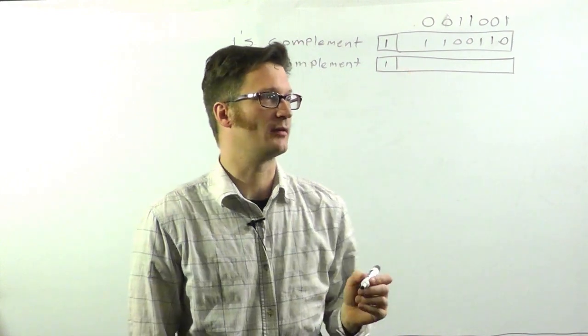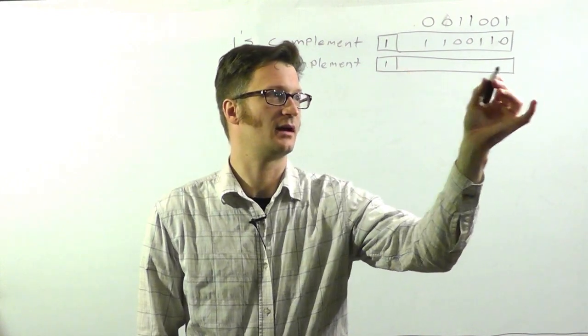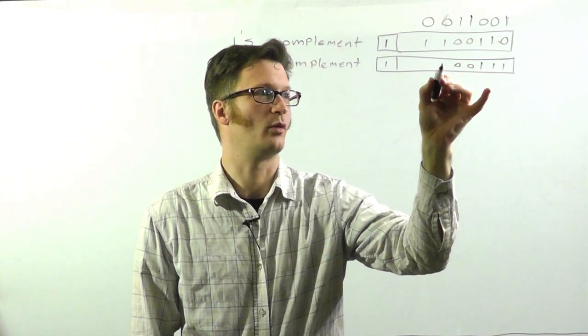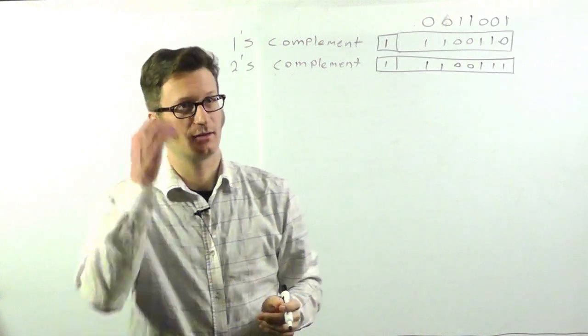So, the sign bit's 1 because it's negative. And we're going to add 1. So, that becomes 1, 1, 1, 0, 0, 1, 1.